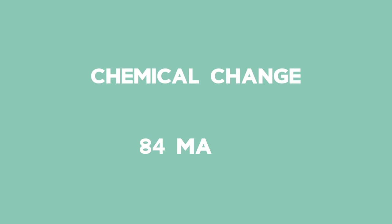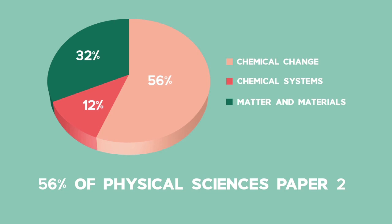Chemical change is roughly 84 marks in the final exam, which is 56% of physical sciences paper 2. Acids and bases is only one portion of this, but it can be one of the most challenging, but also rewarding sections to master.